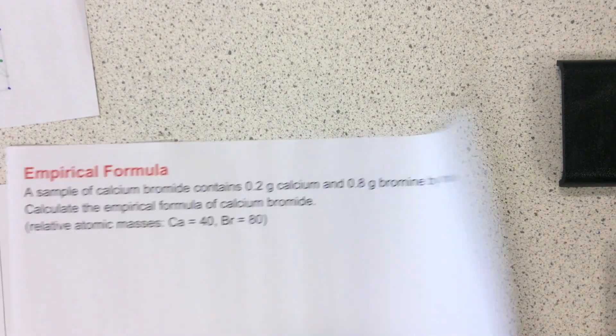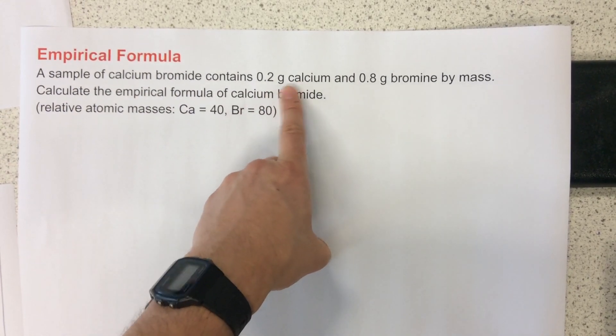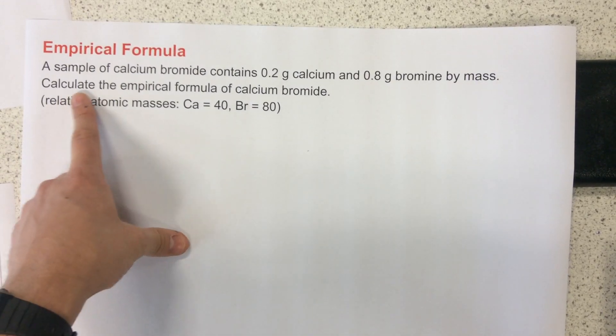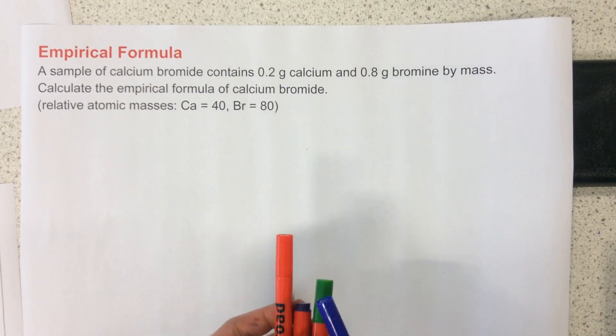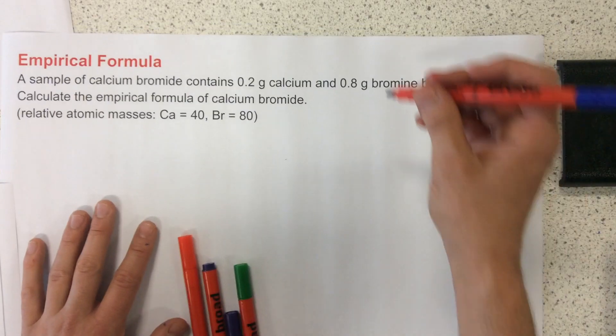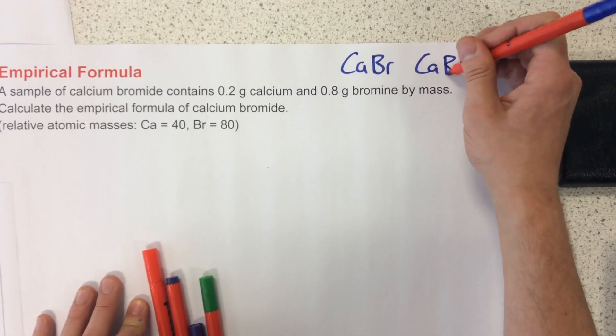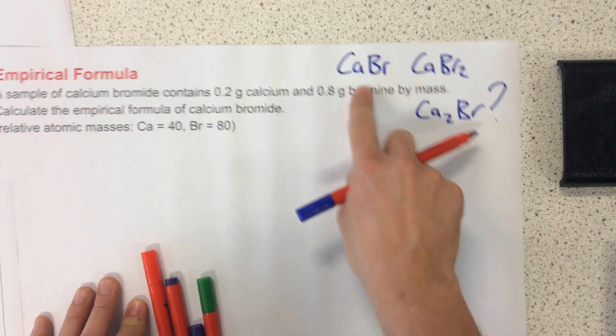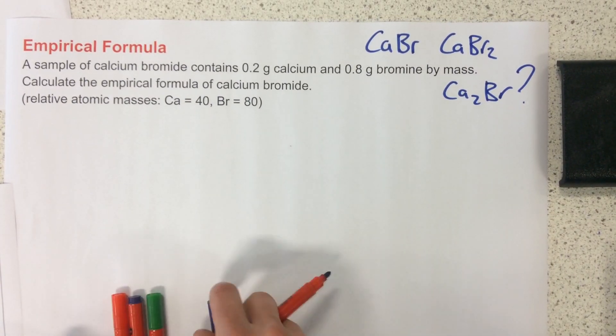But sometimes we get exam questions that look a bit like this. A sample of calcium bromide contains 0.2 grams of calcium and 0.8 grams of bromine by mass. Calculate the empirical formula of calcium bromide. So what we're trying to do is we're trying to figure out calcium bromide. For example, is it just CaBr? Is it CaBr2? Is it Ca2Br? We don't know at the moment. So we're trying to figure out the ratio of calcium atoms to bromine atoms.